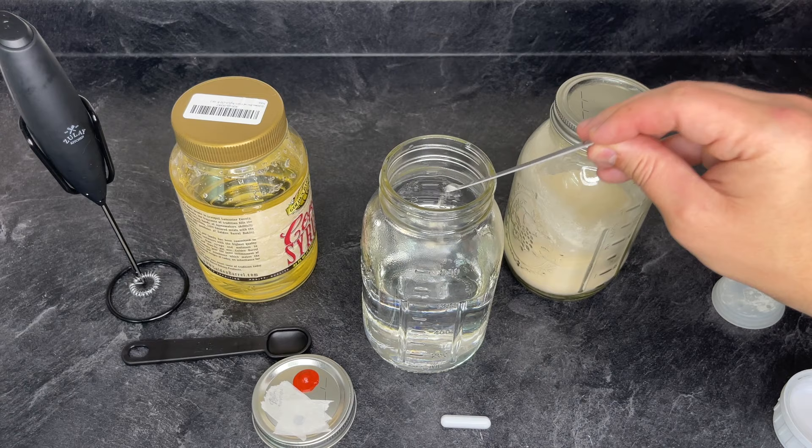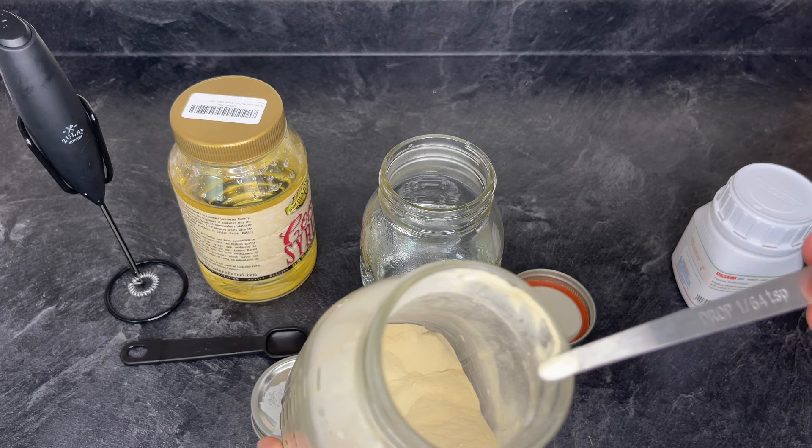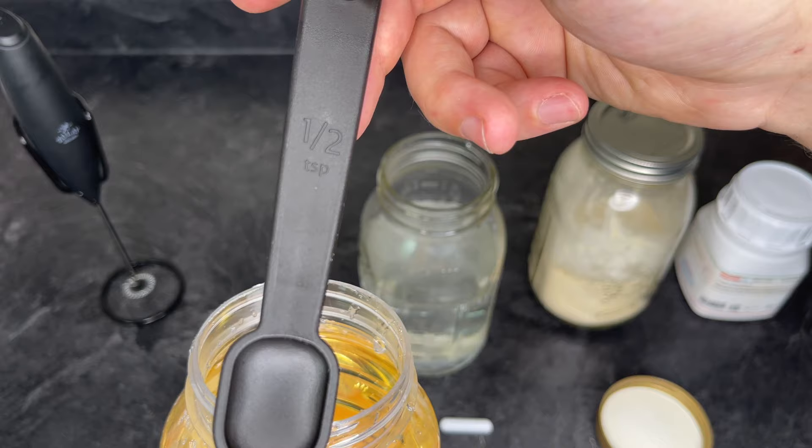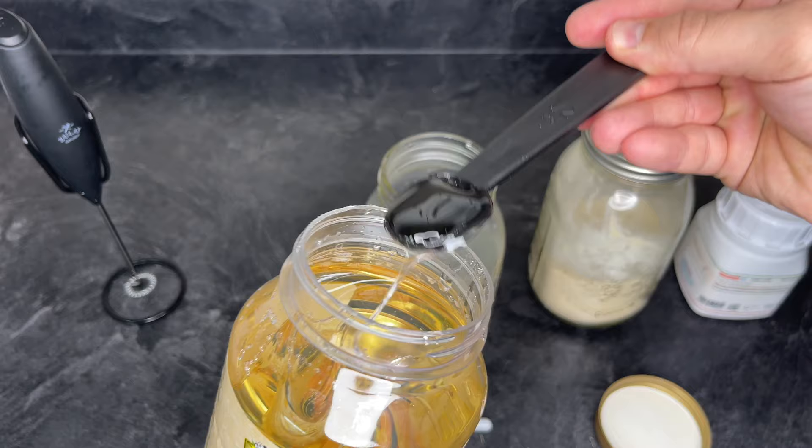I'll make sure to leave links in the description to where you can find the peptone, light malt extract, and corn syrup. I'll also leave a link to a video that will show you how to make the modified jar lids.